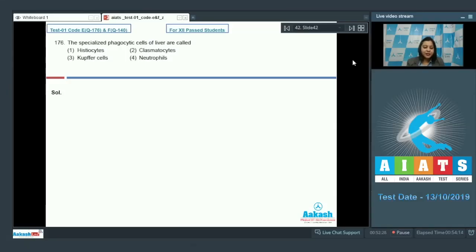Question number 176. The specialized phagocytic cells of liver are called. Options are histiocytes, clasmatocytes, Kupffer cells and neutrophils.